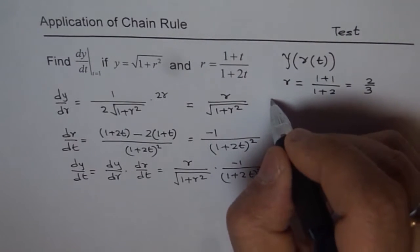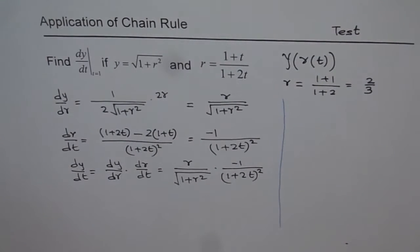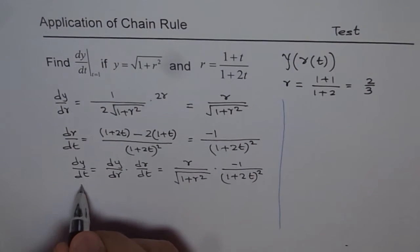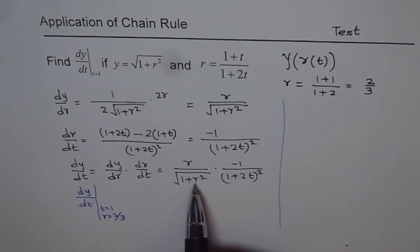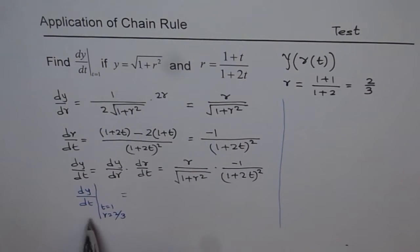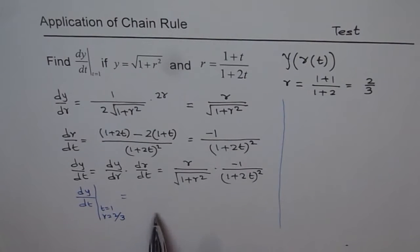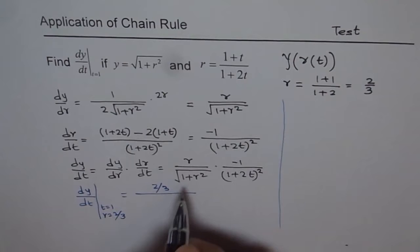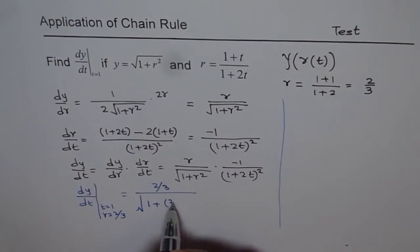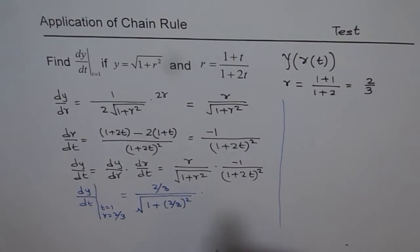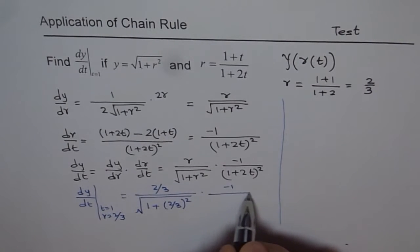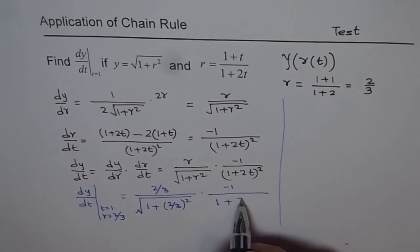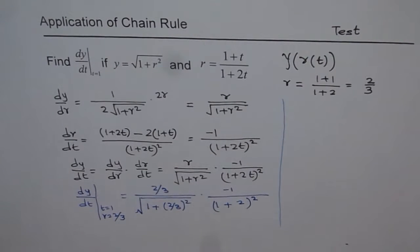Now substitute t equals 1 and r equals 2/3 into the expression. We get (2/3) over the square root of (1 plus (2/3) squared), times minus 1 over (1 plus 2·1) squared. We avoid having to write r as a complicated function of t, which makes this much cleaner.